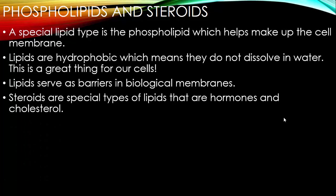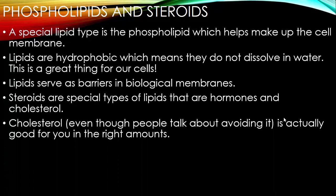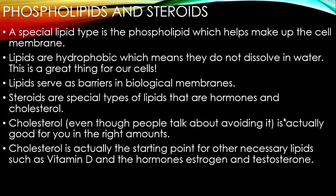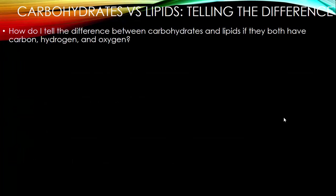Lipids serve as barriers in biological membranes. Steroids are special types of lipids that are hormones and cholesterol. Cholesterol is actually good for you in the right amounts — too much of anything would be bad for you. Cholesterol is the starting point for other necessary lipids such as vitamin D and the hormones estrogen and testosterone. Testosterone helps build muscle, while estrogen allows development of female body parts. A common question is how to tell carbohydrates and lipids apart, because they both have carbon, hydrogen, and oxygen.